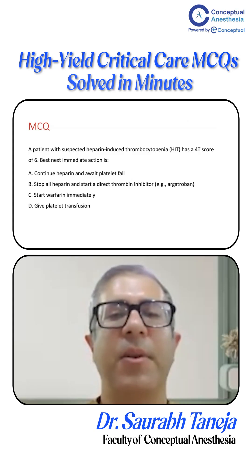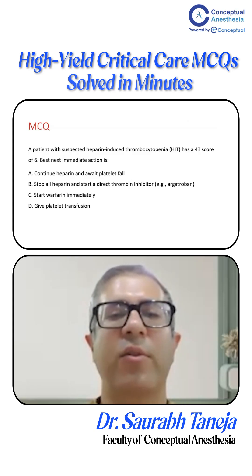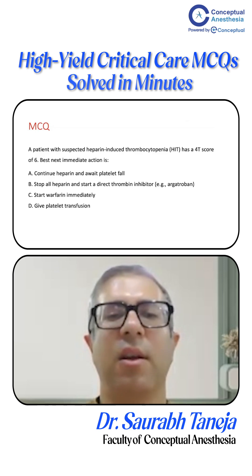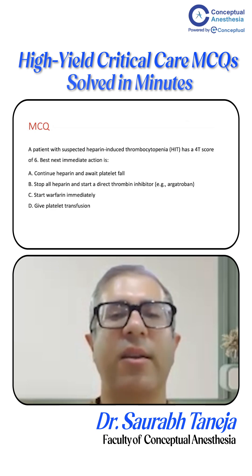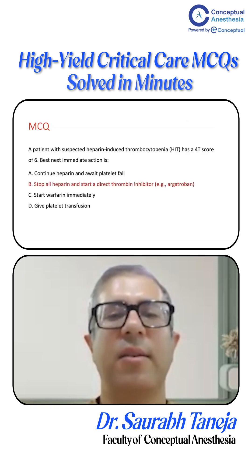A patient with suspected heparin-induced thrombocytopenia has a 4T score of 6. What is the best immediate action? Options include: continue heparin and await platelet fall; stop all heparin and start a direct thrombin inhibitor; start warfarin immediately; or give platelet transfusion. The correct answer is: stop all heparin and start a direct thrombin inhibitor.